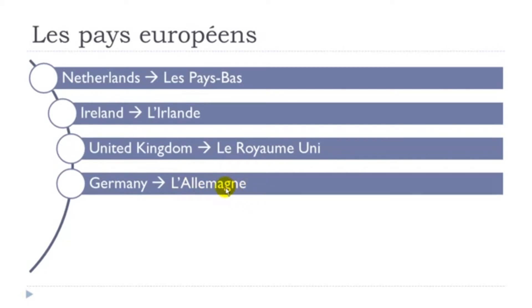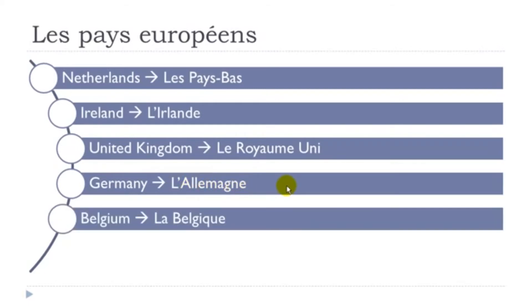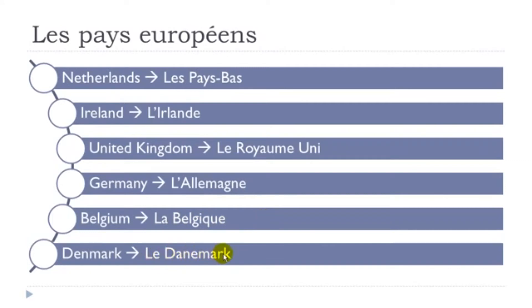Remember this G and E can be quite tricky to produce at the beginning, but you should work on that because the sound is not rare in French. L'Allemagne, l'Allemagne. La Belgique — remember Q-U-E here gives only the sound 'k': Belgique. It's not 'Belgique' with a hard ending, just Belgique.